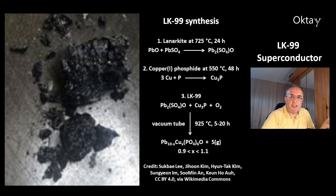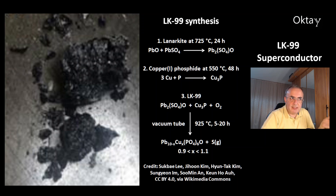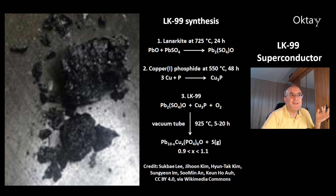This is the synthesis of LK-99. The first step is the synthesis of lanarkite at 725 degrees Celsius from lead oxide and lead sulfate, giving lead sulfate oxide. The second step is the synthesis of copper-1-phosphate from the elements at 550 degrees Celsius. And the third step is the synthesis of LK-99 from lanarkite plus copper-phosphate plus oxygen in a redox reaction in a vacuum tube at 925 degrees Celsius. The product is LK-99 plus the by-product sulfur.